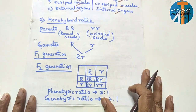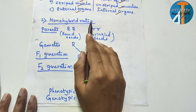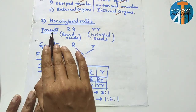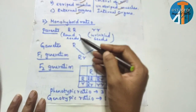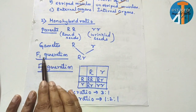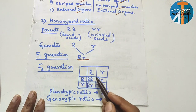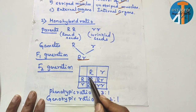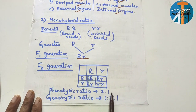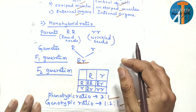Very important biology question: monohybrid ratio — Punnett square checkerboard. Parents: capital R (round seeds) × small r (wrinkled seeds). Gametes: R and r. F1 generation: Rr. F2 generation cross gives RR, Rr, Rr, rr. Final result: phenotypic ratio is 3:1 and genotypic ratio is 1:2:1. This is the monohybrid ratio.